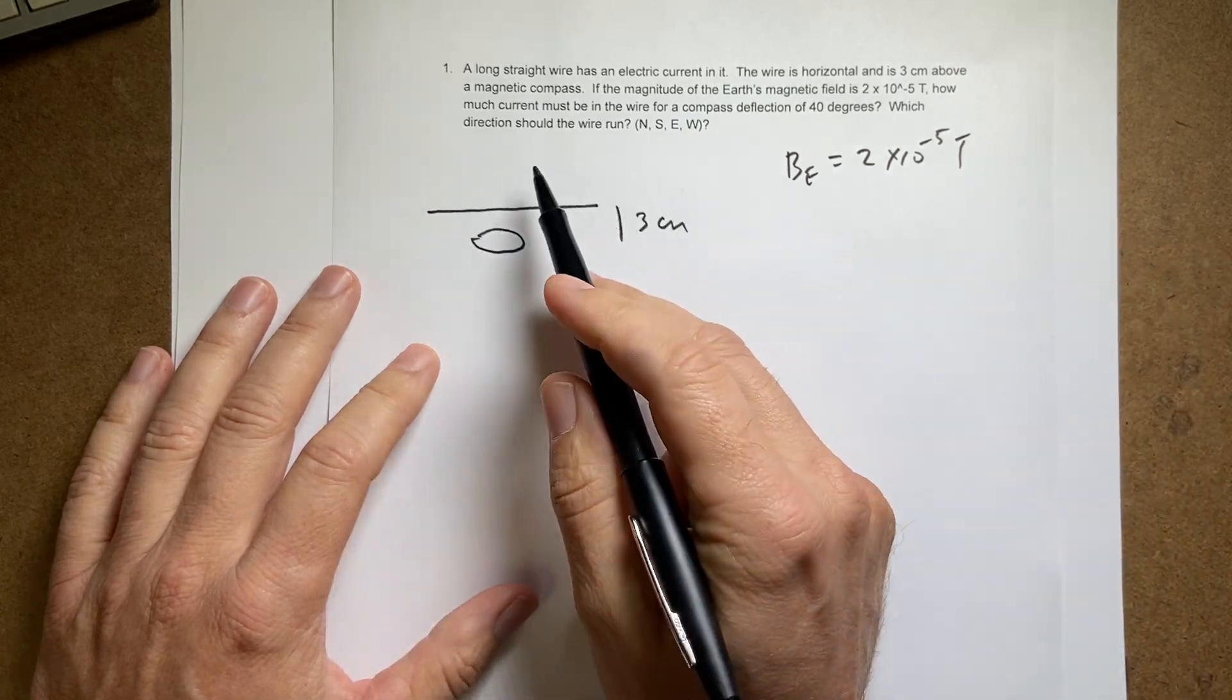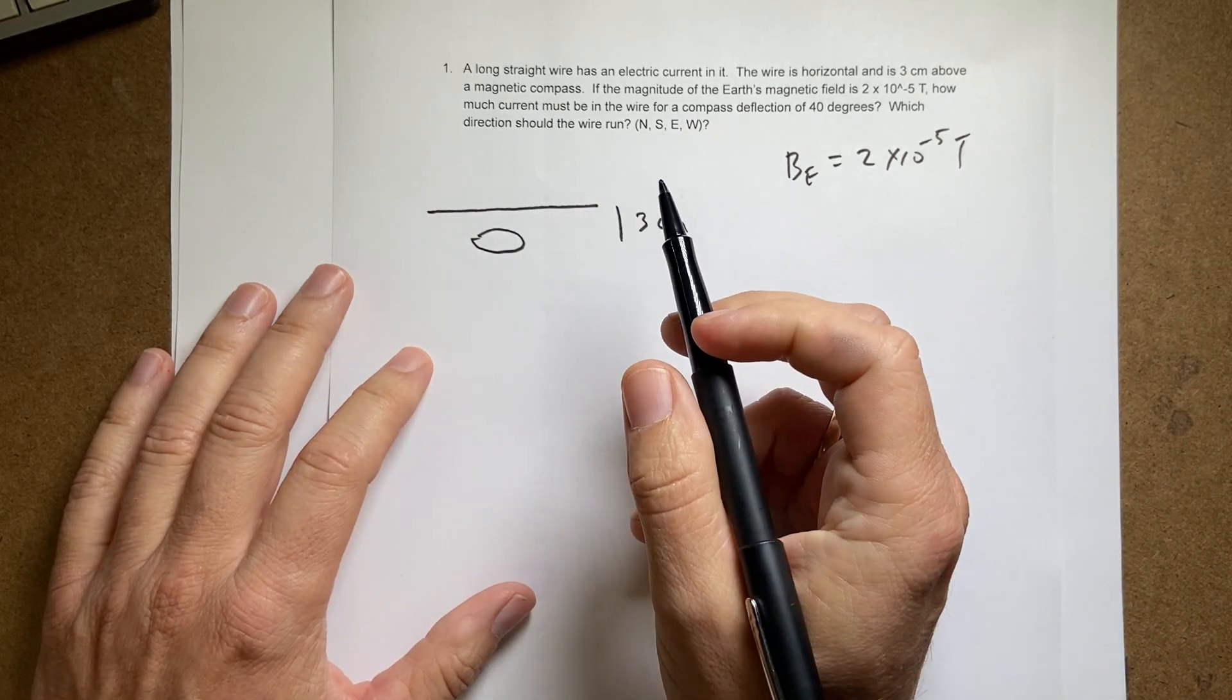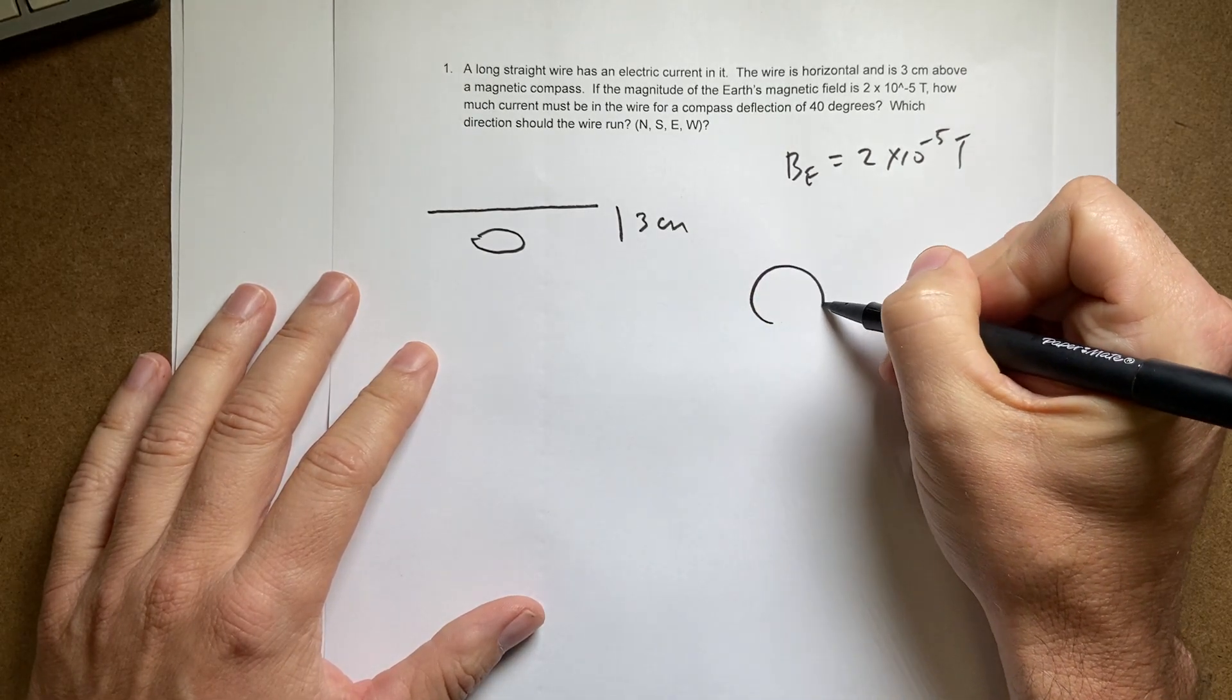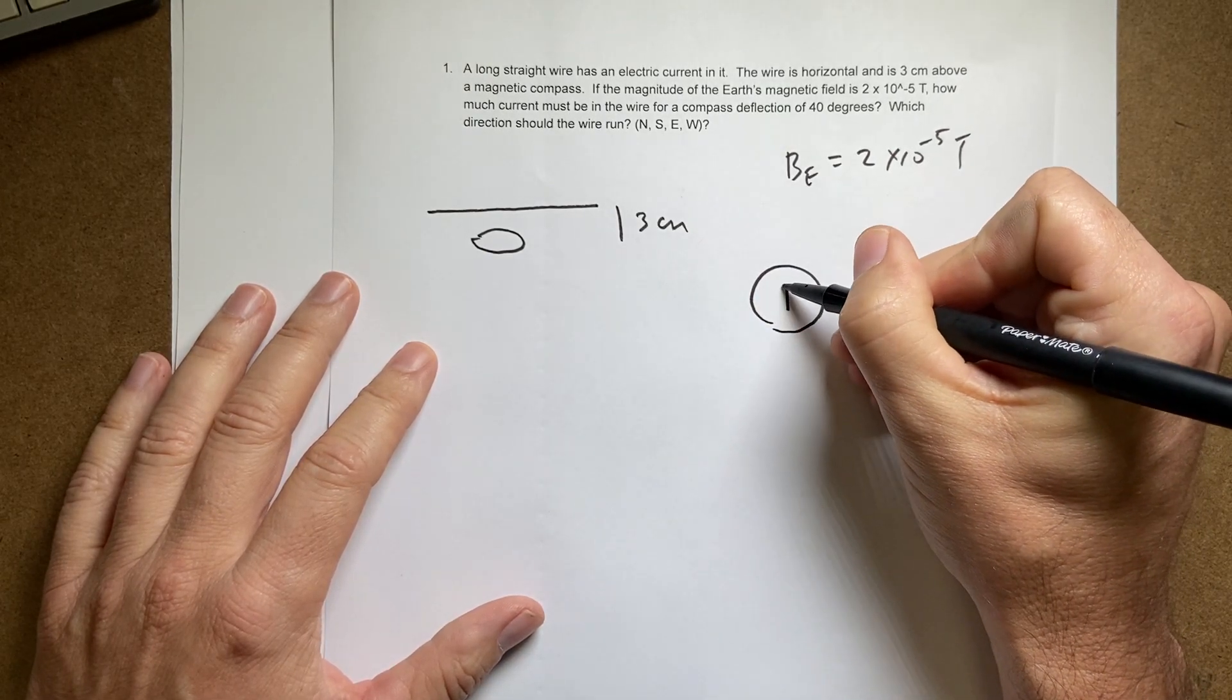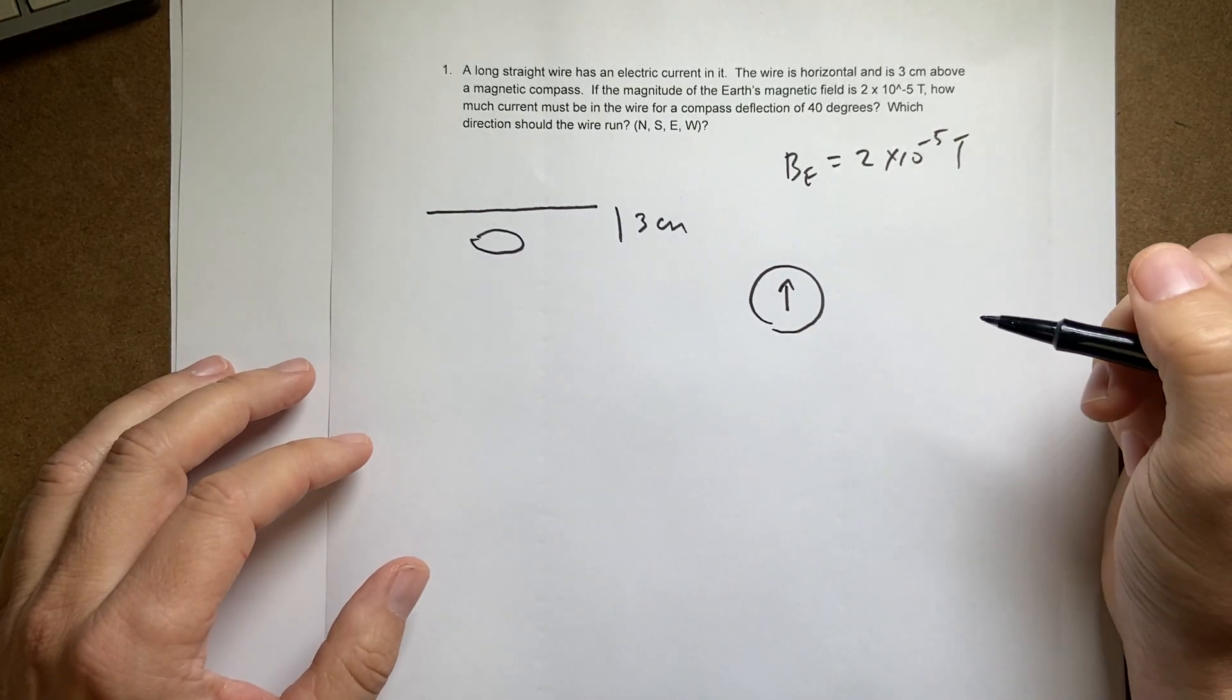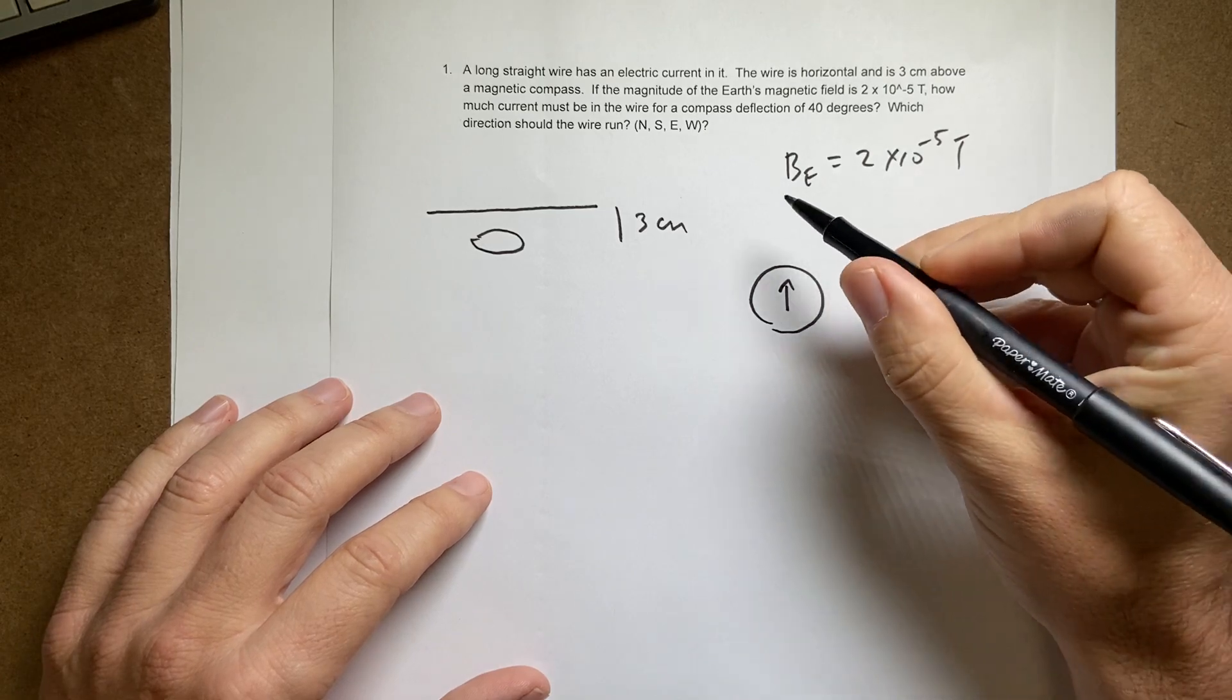So let's start, and which direction should the wire run? So let's start with the compass. Here is my magnetic compass. And it's pointing north, like that.